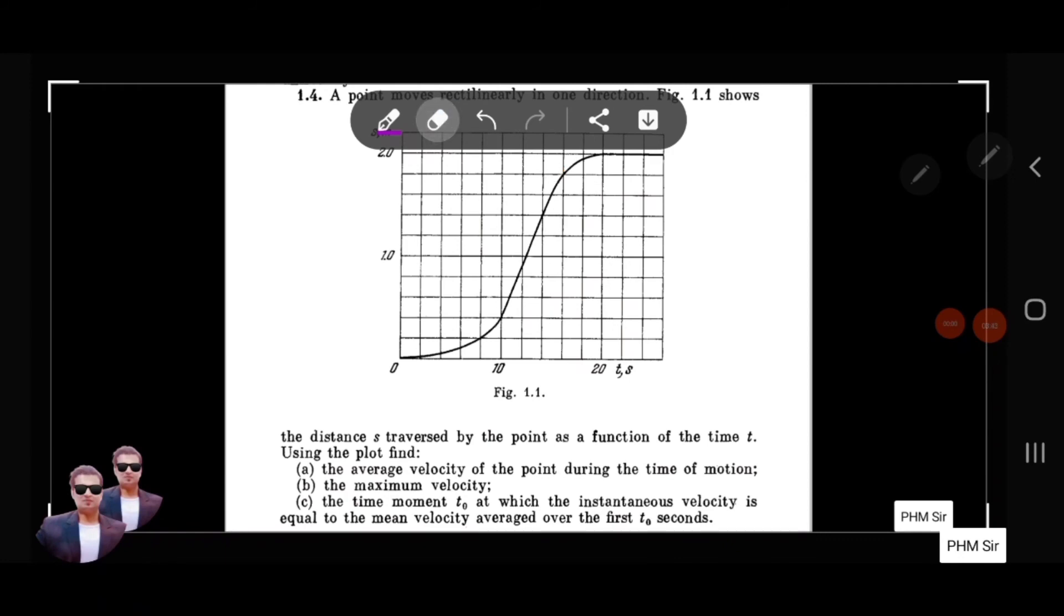Basically, we need to find where the average speed and instantaneous speed are equal. You make a line from the beginning, and you find a tangent on this graph. When you find a tangent on this graph that matches the average velocity line, that is the point.